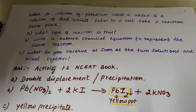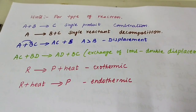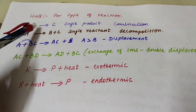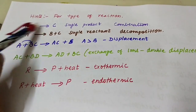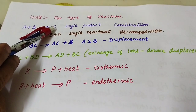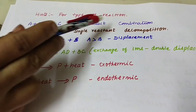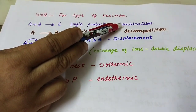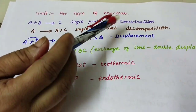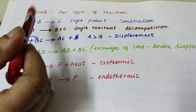To identify reaction types: if A + B → AC, only a single product is formed on the product side, so it is a combination reaction. Single product formed means combination reaction.